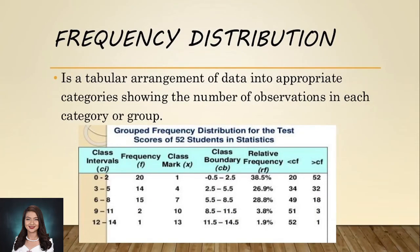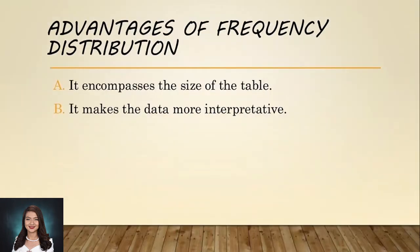Now let's talk about frequency distribution. Frequency distribution is a tabular arrangement of data in appropriate categories showing the number of observations in each category or group. Looking at this frequency distribution for the test scores of 52 students in E-statistics, we have columns for class intervals (CI), frequency (F), class mark (X), class boundary (CB), relative frequency (RF), less than cumulative frequency, and greater than cumulative frequency. One advantage of using frequency distribution is it reduces the size of the table and makes the data more interpretable.